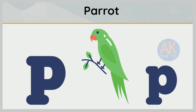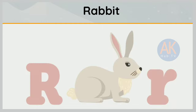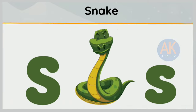P is for parrot. P, p, parrot. Q is for queen. Q, q, queen. R is for rabbit. R, r, rabbit.